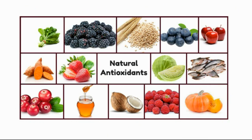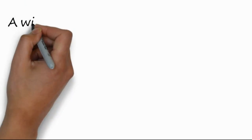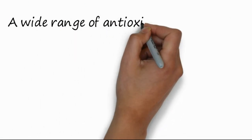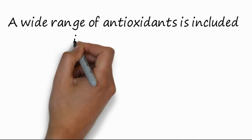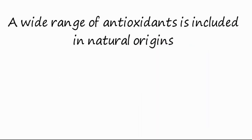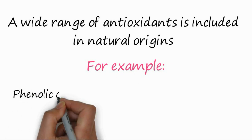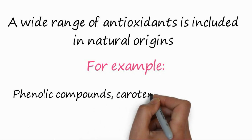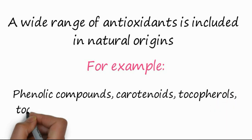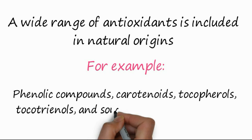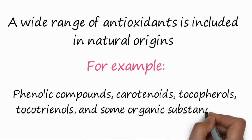You can see a lot of food products — whether from animal or plant sources — that contain natural antioxidants. For example, different types of berries, honey, fish, and oils. A wide range of antioxidants is included in the natural antioxidant class, such as phenolic compounds, carotenoids, tocopherols, tocotrienols, and some organic substances.